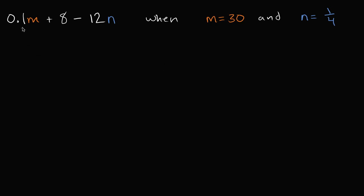So over here I have this expression, 0.1m plus 8 minus 12n when m is equal to 30 and n is equal to 1 fourth.